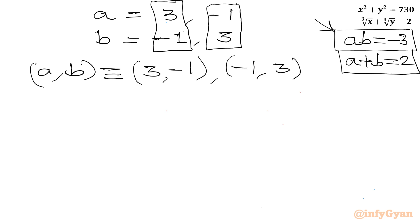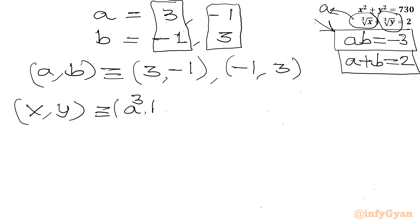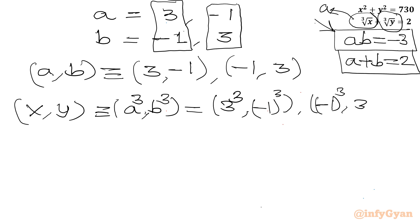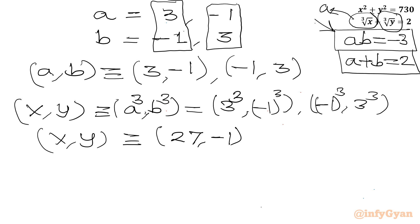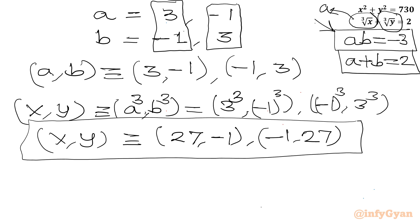Now we find x and y. Our substitution was x equal to a cubed and y equal to b cubed. So the ordered pair (x, y) equals (a³, b³). For (a, b) equal to (3, minus 1): x equals 3³ equals 27 and y equals (minus 1)³ equals minus 1. For (a, b) equal to (minus 1, 3): x equals minus 1 and y equals 27. So our final answer for the ordered pair (x, y) is (27, minus 1) and (minus 1, 27).